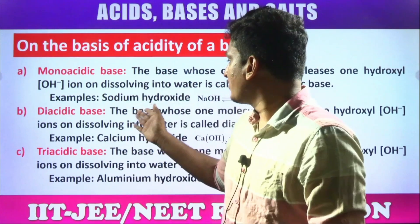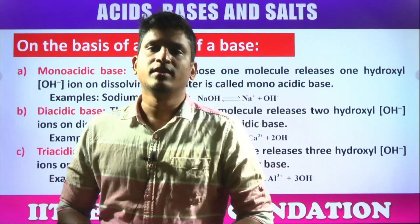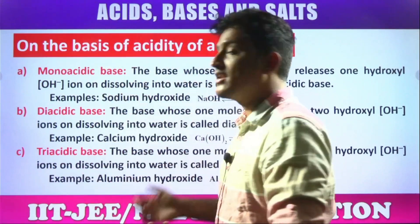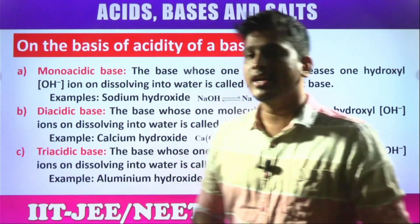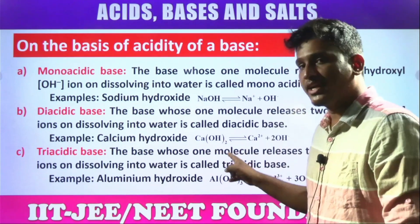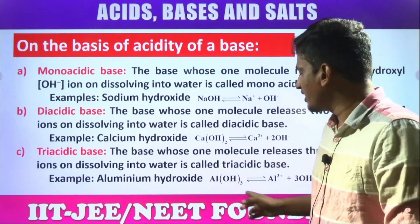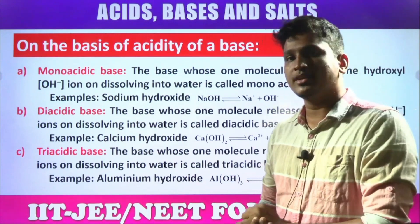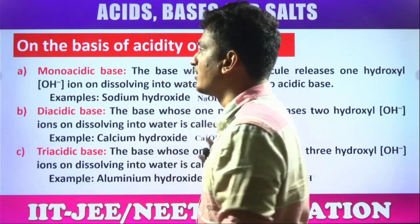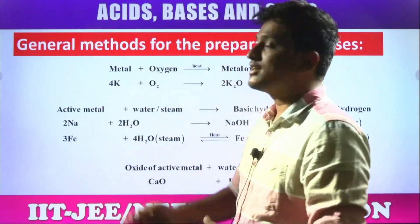For example, NaOH releases only one OH⁻ ion — Na⁺ and OH⁻ only — so it is a monoacidic base. Calcium hydroxide Ca(OH)₂ releases two OH⁻ ions, so it is diacidic. Aluminium hydroxide Al(OH)₃ releases three OH⁻ ions, making it a triacidic base. This is the classification in terms of acidity.